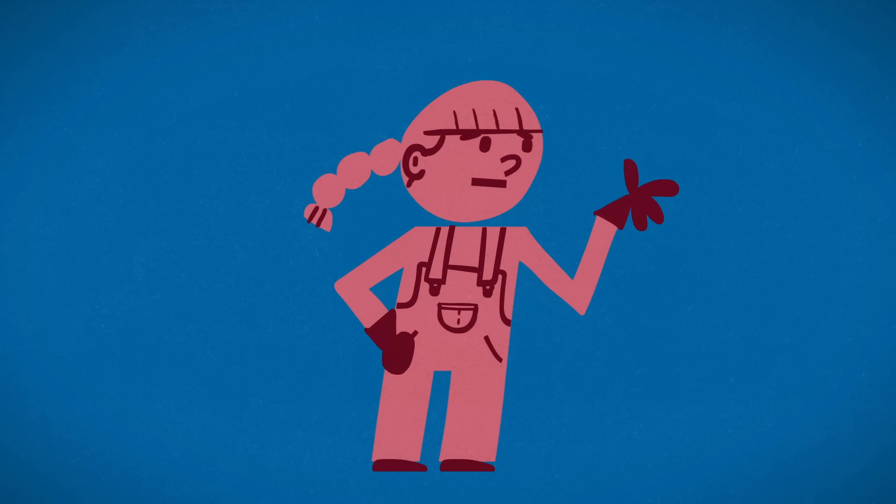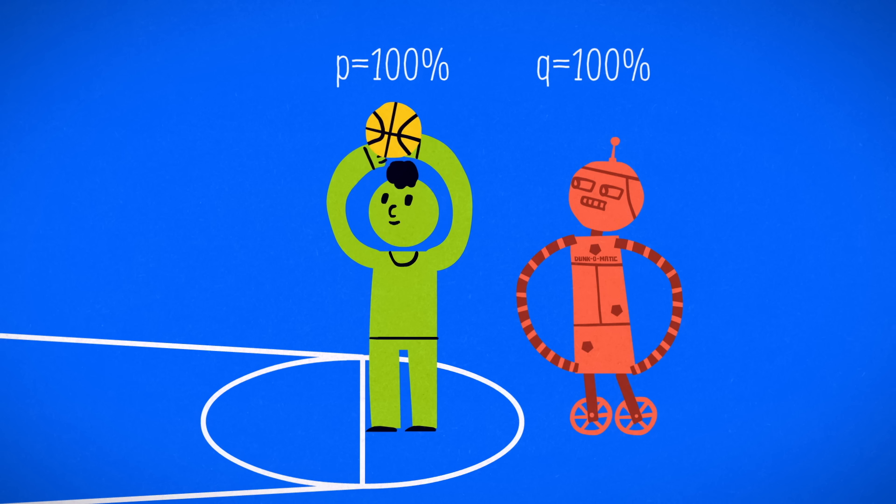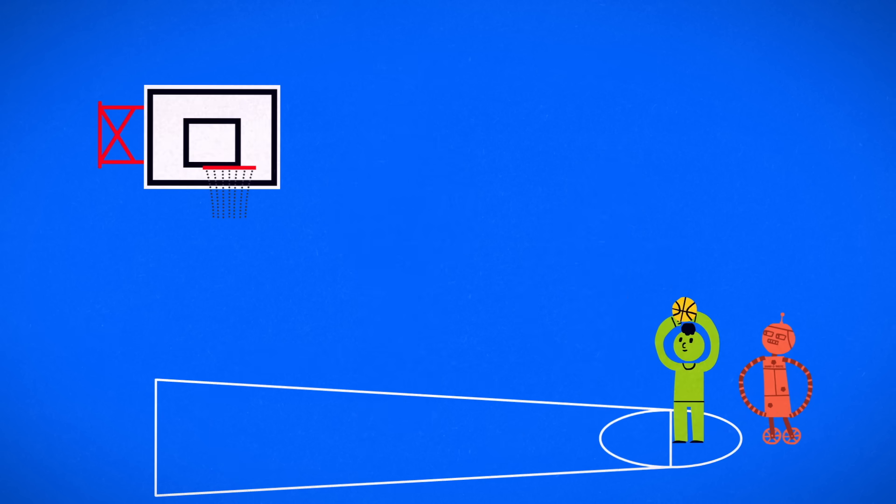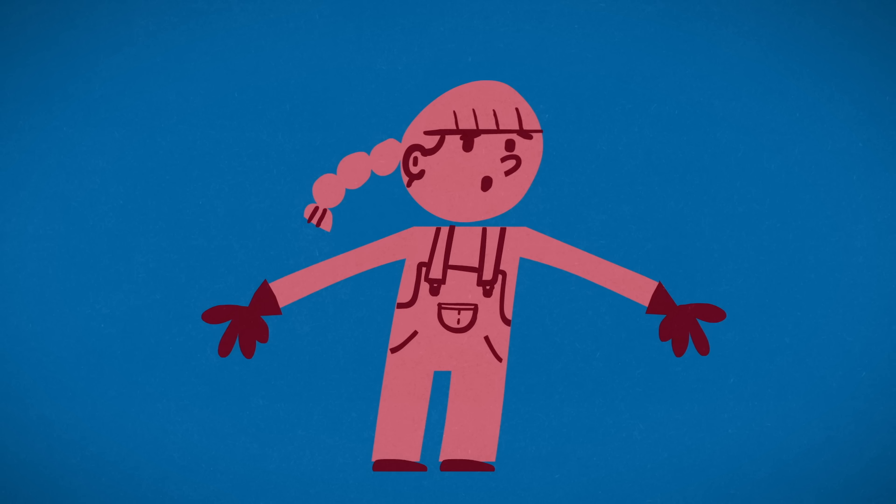You might guess that Q should be equal to P, but that ignores the advantage of going first. Suppose P and Q are both 100%. Even though the competitors are equally skilled, the first player always wins, so a deeper analysis is required.